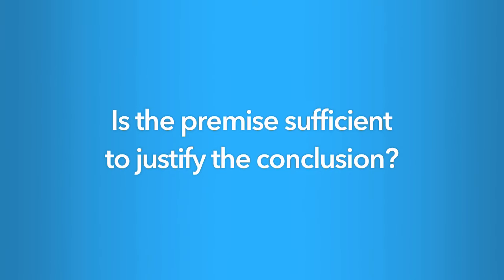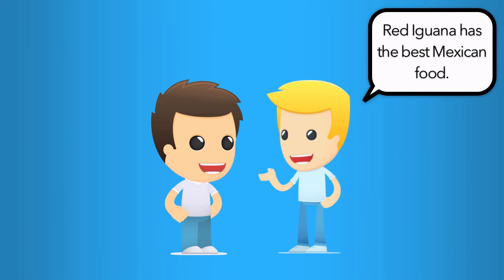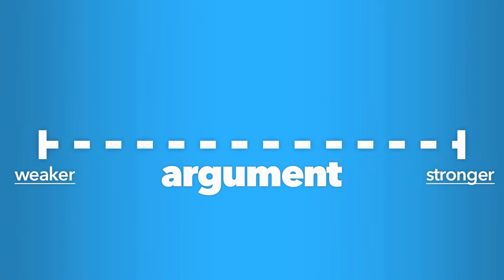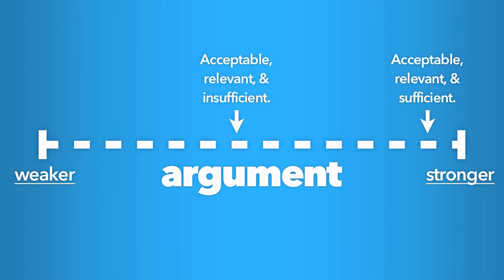Finally, you need to consider whether the premise is sufficient to justify the conclusion. Is the opinion that the Red Iguana has the best Mexican food really enough to base the decision on? Are there other things you might want to consider — for example, how long is the wait for a table, or how good is the service? Evaluation of inductive arguments falls into a range from weaker to stronger. If the premise is highly acceptable, relevant to the issue, and enough of a reason to base your decision on, then you would conclude the argument is fairly strong. If it is highly acceptable and relevant but not really sufficient enough to make a decision based on that premise alone, the argument is so-so — not weak, but not strong enough. You could improve the argument by offering more premises to support it.